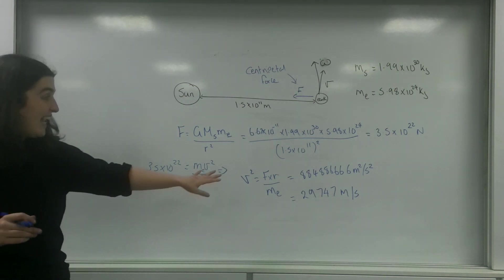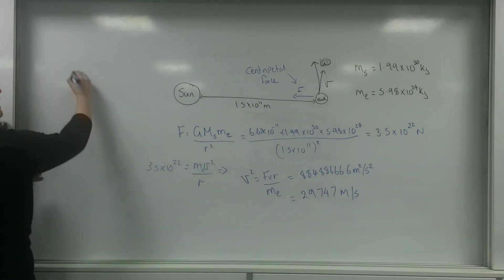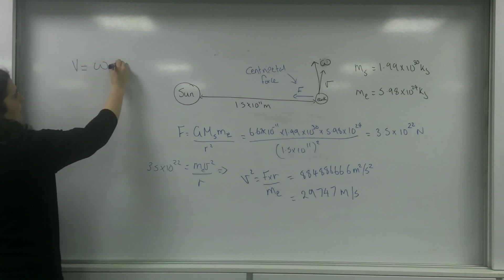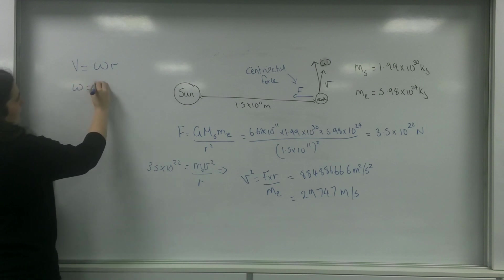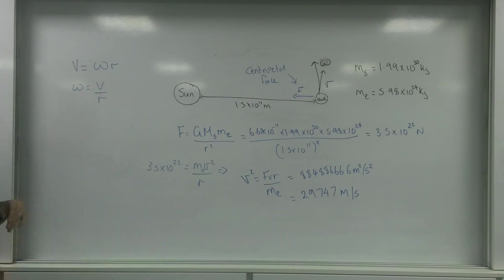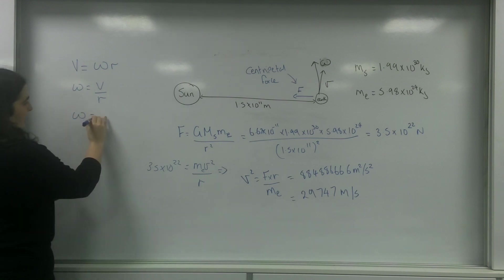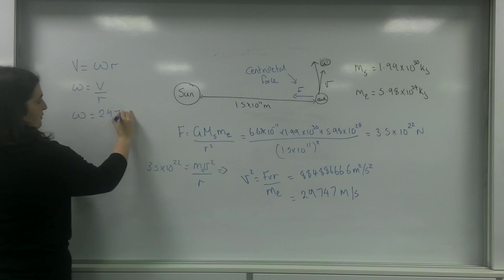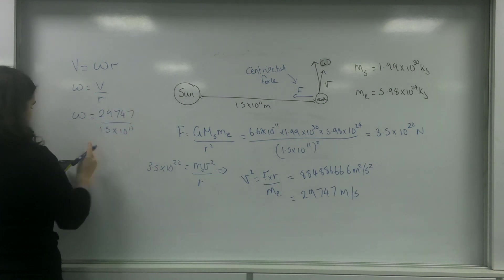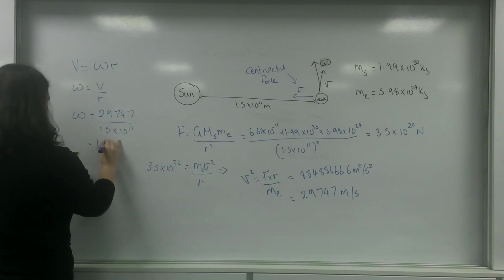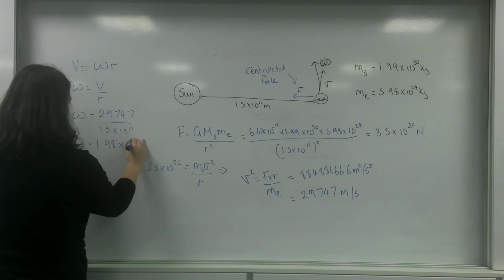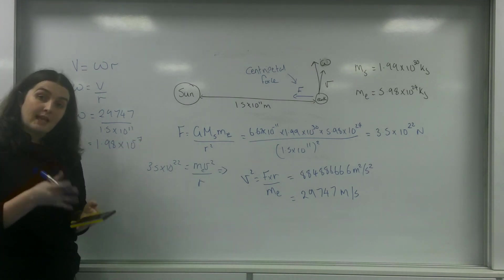I can then take this value and use V equals omega R. So omega is V over R, and I can work out my value for angular velocity. So 29,747 over 1.5 times 10 to the 11 is 1.98 times 10 to the minus 7 radians per second.